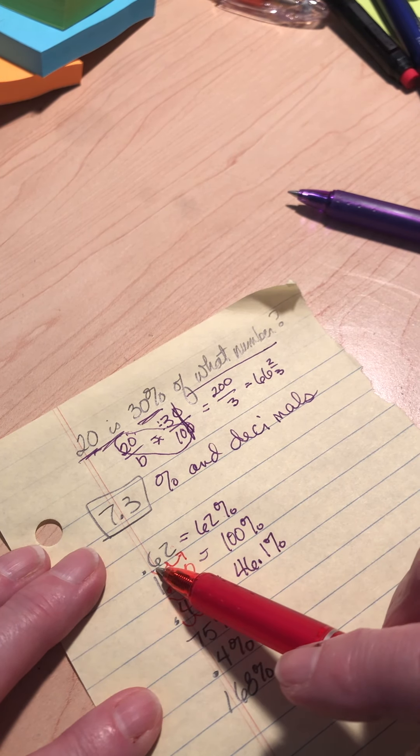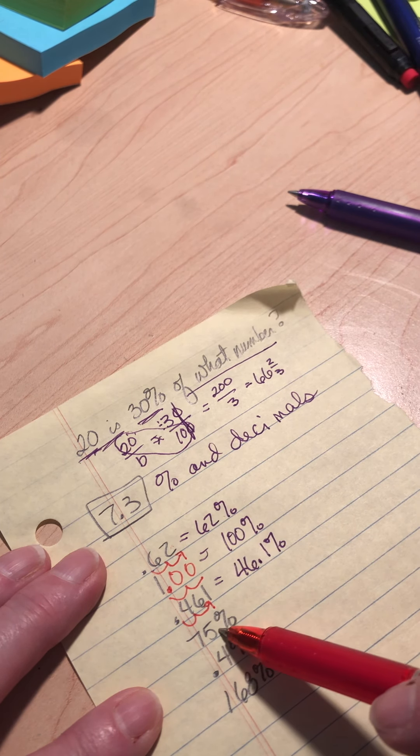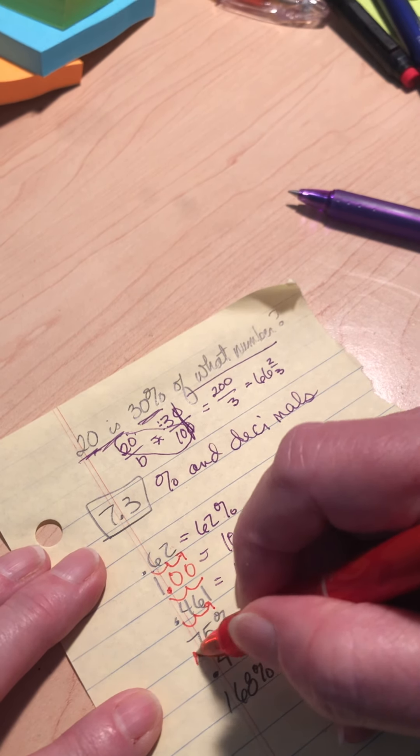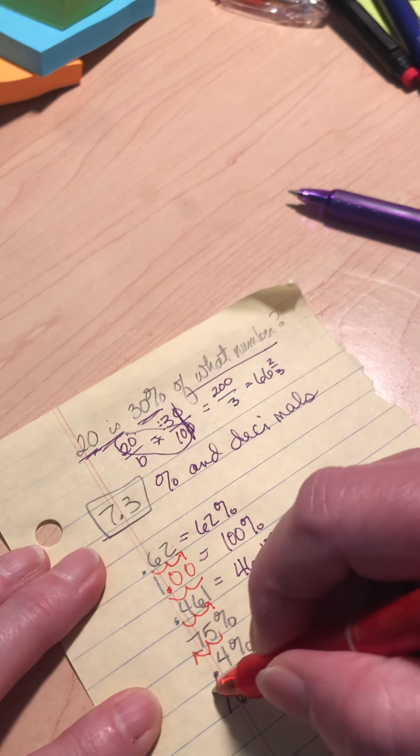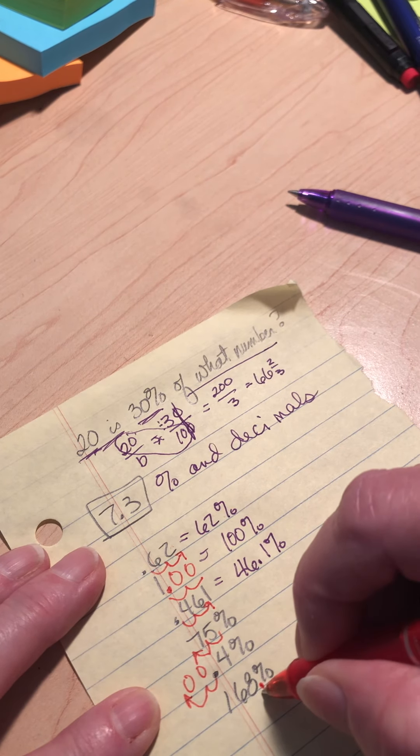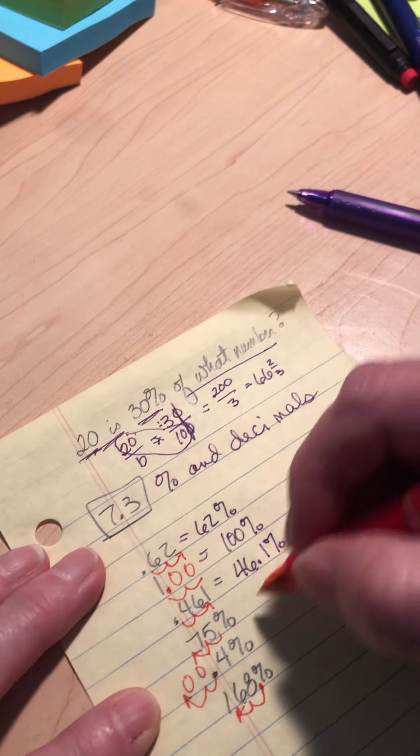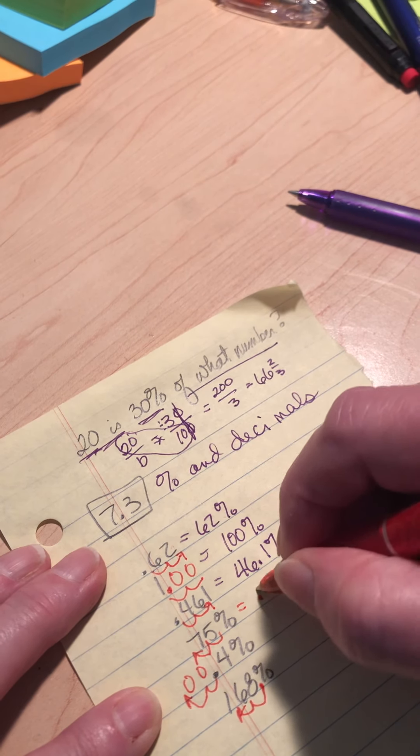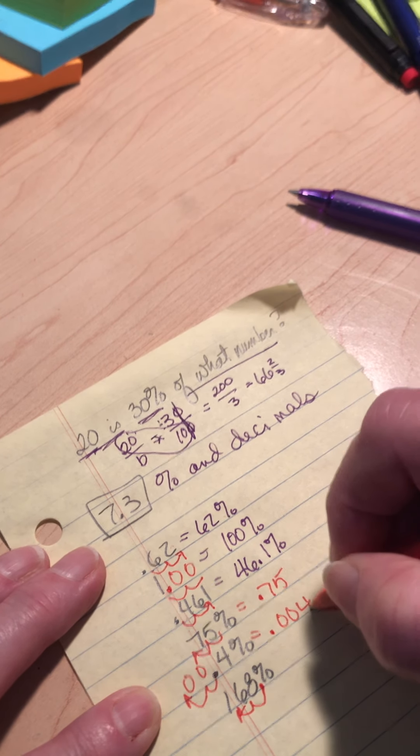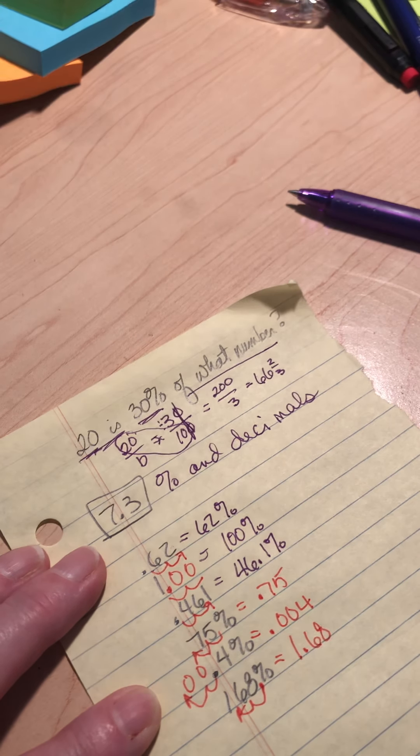Obviously, if going from a decimal to a percent, I move it to the right. When I go from a percent to a decimal, I'm going to move it to the left. I've got to move it to the left. That means I've got to add a couple of zeros in here. It starts at the back, moves to the left. Do you kind of see how that goes? So this is going to be 0.75. This is going to be 0.004. And this is going to be 1.68.